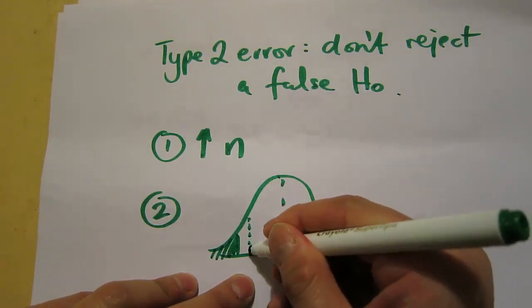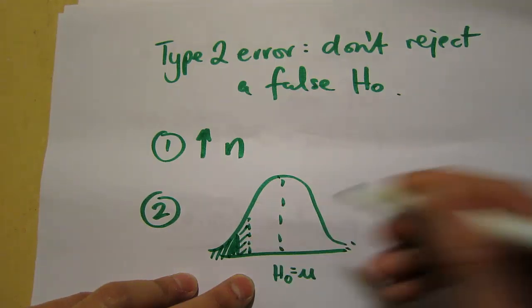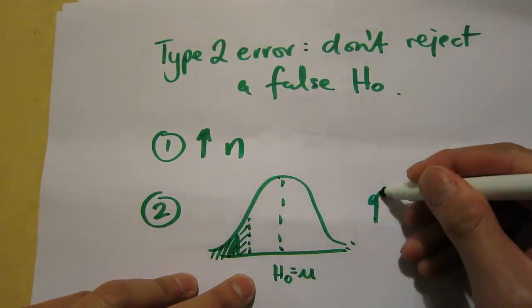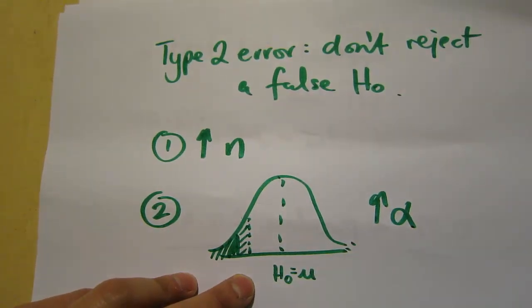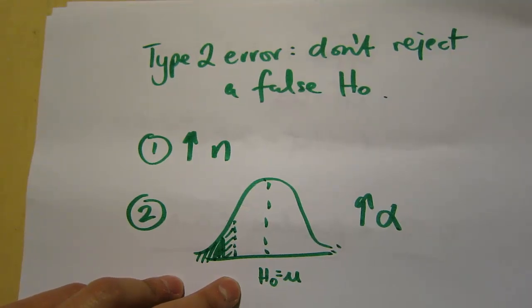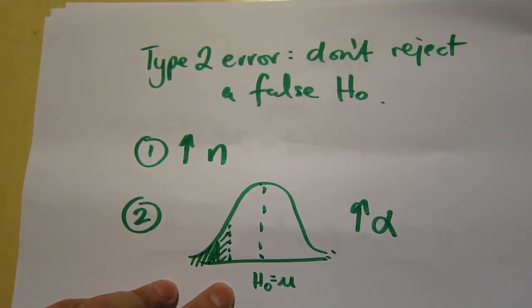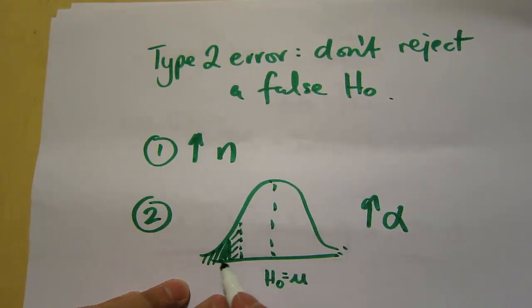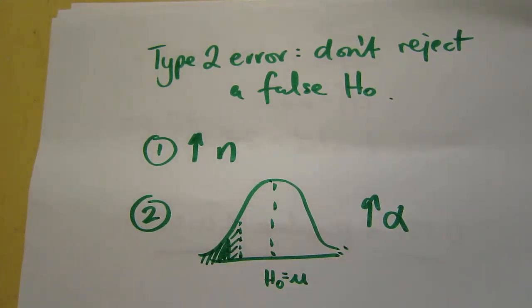So what do we do? We should increase our rejection region. Okay, so if we increase our significance level, or alpha, that would increase the power of the test. Because increasing alpha would increase our rejection region, so we're less likely to commit a type 2 error.